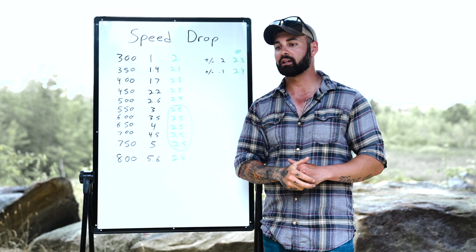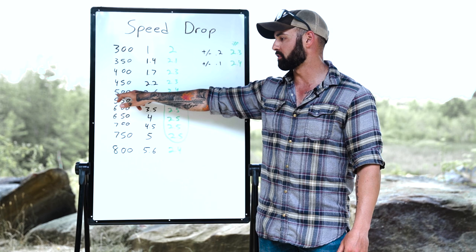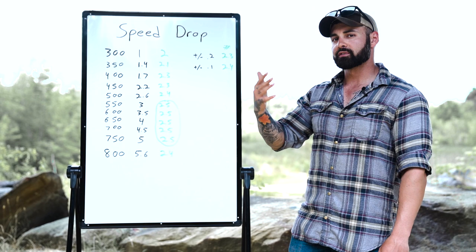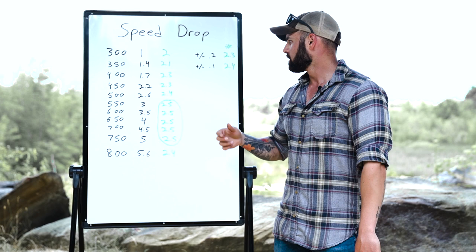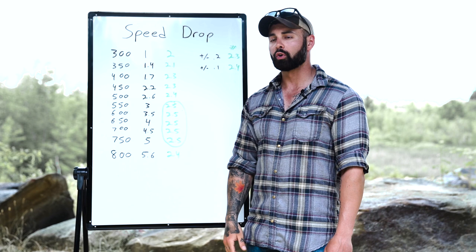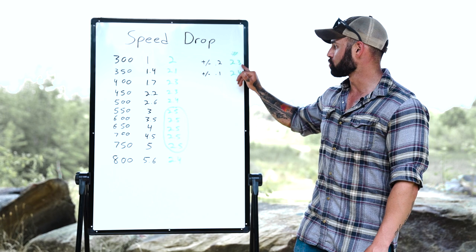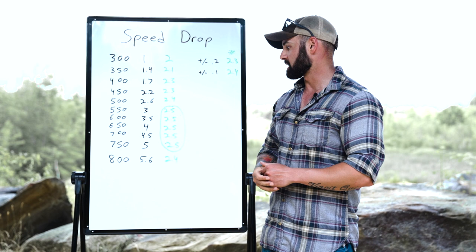For those with zero stops that allow you to adjust below zero, dial your speed drop number — 2.3 — under zero, not above. You've effectively erased the speed drop from the scope and now you just hold the range: 400 yards hold 4, 450 hold 4.5, 500 hold 5, 550 hold 5.5, and so on. For those of us who can't go that far under zero, dial 0.3 under zero and subtract 2 from the range. Target at 400 yards — four minus two, pull two mils, fire. Target at 700 — seven minus two, hold five mils, fire. That easy.